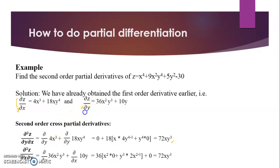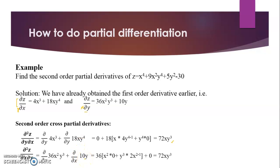For the other cross partial derivative, we differentiate dZ/dY = 36X²Y³ + 10Y with respect to X. For 36X²Y³, Y³ is constant with respect to X, so we get 36 × Y³ × derivative of X² = 36Y³ × 2X = 72XY³. The derivative of 10Y with respect to X is 0 since Y is constant. So ∂²Z/∂X∂Y = 72XY³ as well.